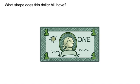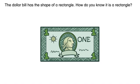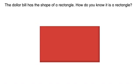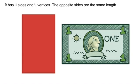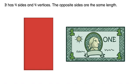What shape does this dollar bill have? The dollar bill has the shape of a rectangle. How do you know it is a rectangle? It has four sides and four vertices. The opposite sides are the same length.